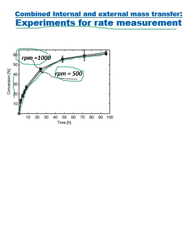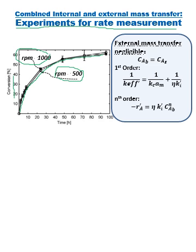What we can conclude from this set of experiments is that the external mass transfer is negligible. That is key word for the bulk concentration is equal to the surface concentration. I can use my bulk concentration in my rate. However, this resistance is zero.